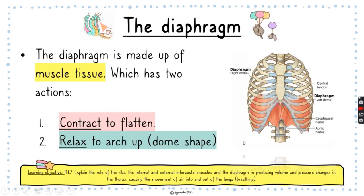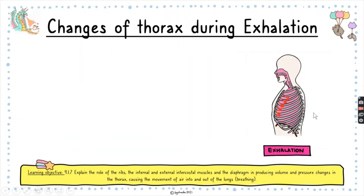Here is a more realistic diagram of the diaphragm. Think of it like an umbrella: when it relaxes, it arches upwards into a dome shape. When it contracts, it flattens, which increases the volume of the thoracic cavity.